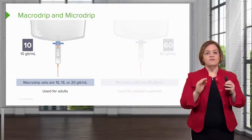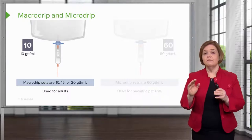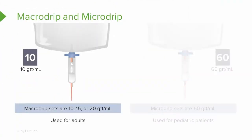We have macro drip tubing and micro drip tubing. Macro drip sets have 10 drops per mil, 15 drops per mil, or 20 drops per mil. Remember, GTT means drops. In this example we see 10 in the box — that would be 10 drops per mil — but other sets can be 15 or 20. You just have to look at the package the tubing comes in. This is what we predominantly use for adults.